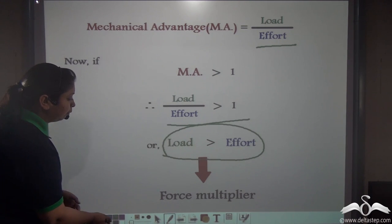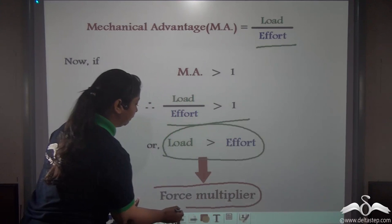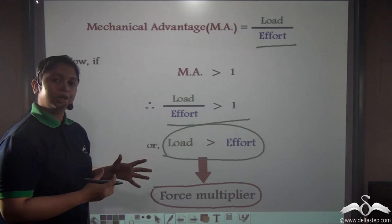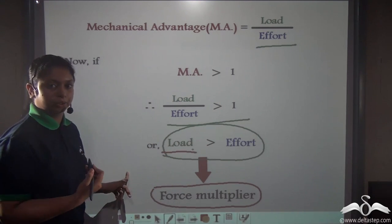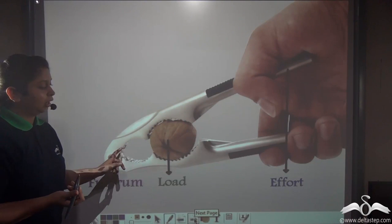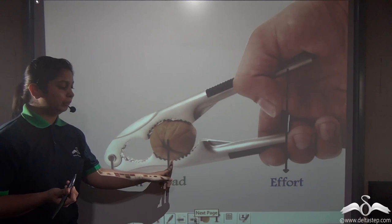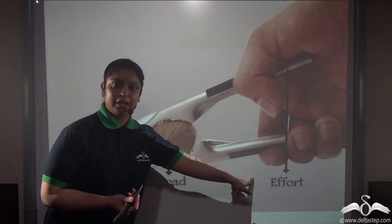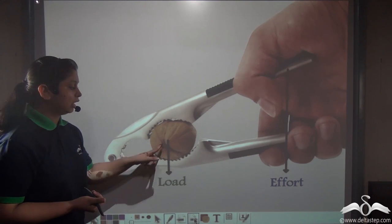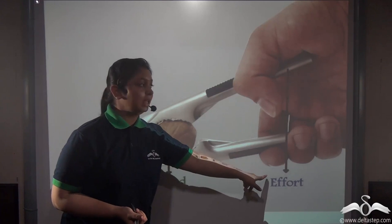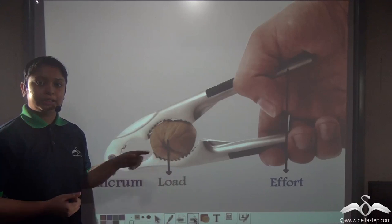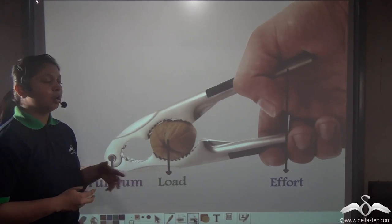These types of machines are known as force multipliers because they multiply the effort we apply in order to overcome a much larger load. For example, a nutcracker is a class 2 lever because the load is between the fulcrum and the effort. Breaking a nut with bare hands is very difficult, so we apply a smaller effort on the handles of the nutcracker — making it a force multiplier.